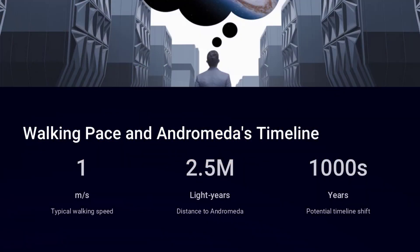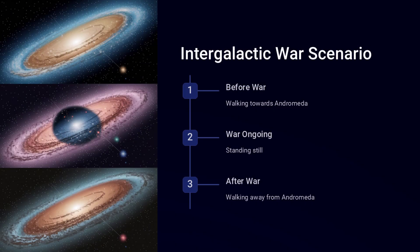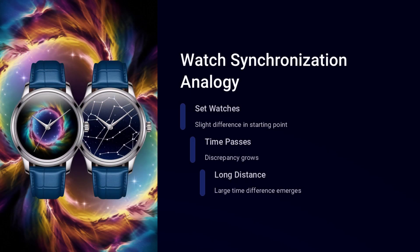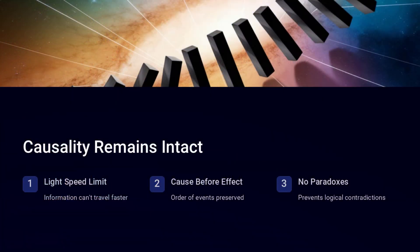It arises because special relativity tells us that there is no absolute present moment that everyone agrees on. Instead, what we call simultaneous depends on our motion. To understand this, consider the relativity of simultaneity.